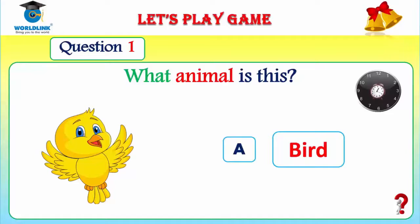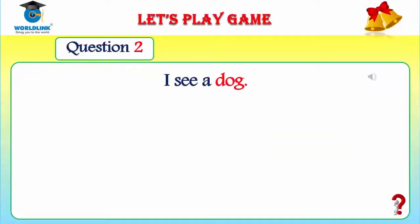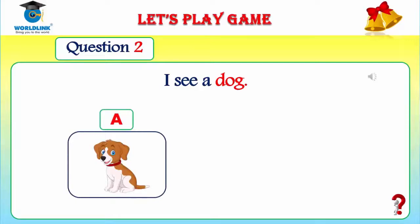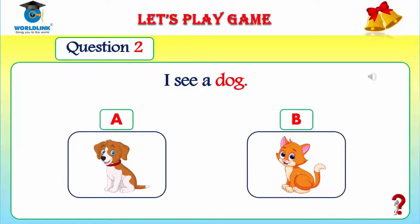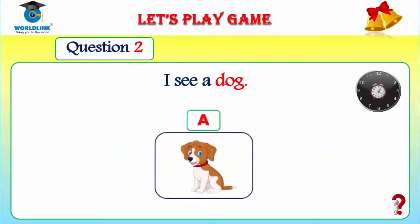Now move on to the next question. Question number two: I see a duck. Is it A or B? Five seconds for you. Wow, time is up. Picture B — I see a cat. And picture A — I see a duck. Let's check the answer. The answer is A. I see a duck. Very good.